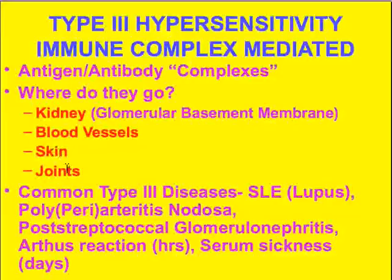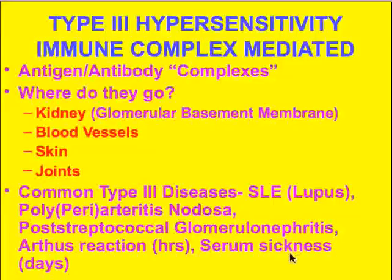Skin — as in lupus — and joints or any synovial-lined cavity are also big magnets for immune complexes. Common type three diseases include first the 'mother of all autoimmune diseases,' lupus or systemic lupus erythematosus; polyarteritis nodosa; post-streptococcal glomerulonephritis; and some systemic reactions such as the Arthus reaction — a skin reaction usually resulting hours after exposure — or the more generalized serum sickness, which can last for days.